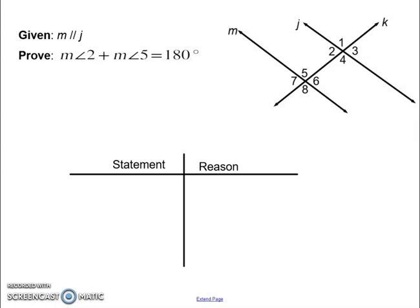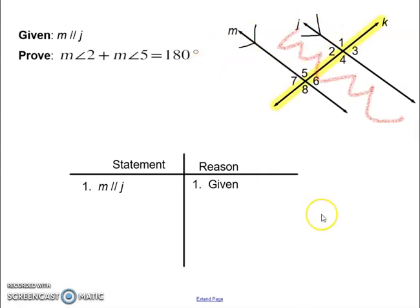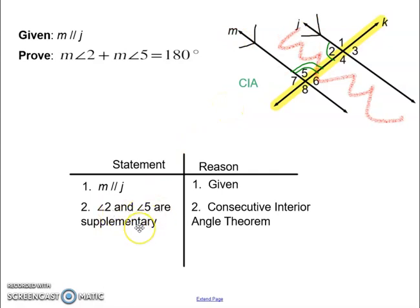Let's try another proof. Once again, I am giving the same exact picture. I am telling you line M is parallel to line J, and I want to prove that the measure of angle two plus the measure of angle five equals 180. We are given that M is parallel to J — we always write the given information down first. Now that I know I have parallel lines, let's highlight my transversal, shade my inside, and focus on the two angles: two and five are consecutive interior angles, or same-side interior angles. If I have parallel lines, angle two and angle five are supplementary — that's the consecutive interior angle theorem.